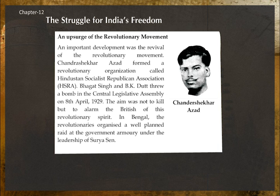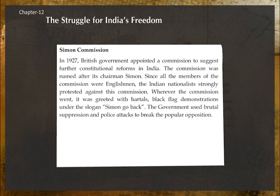In Bengal, revolutionaries organized a well-planned raid on the government armory under the leadership of Surya Sen. Simon Commission: In 1927, the British government appointed a commission to suggest further constitutional reforms in India, named after its chairman Simon. Since all members were Englishmen, Indian nationalists strongly protested. Wherever the commission went, it was greeted with hartals, black flag demonstrations, and the slogan 'Simon Go Back.' The government used brutal police suppression to break the popular opposition.